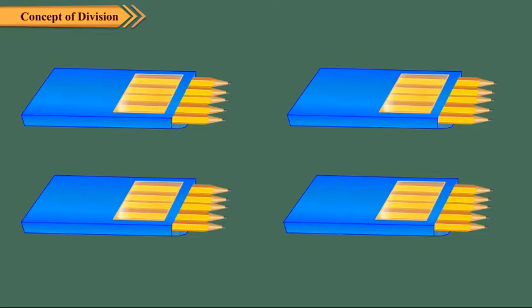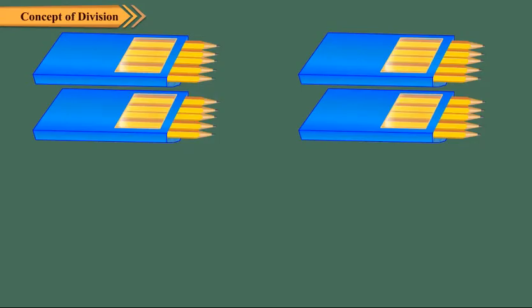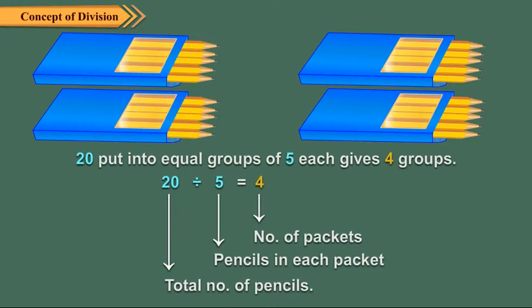Now there are no pencils left. So we can say that 20 pencils put into equal groups of five each gives four groups. Children, you can see in equal grouping, you know how many are in the group and can find out how many groups are there.